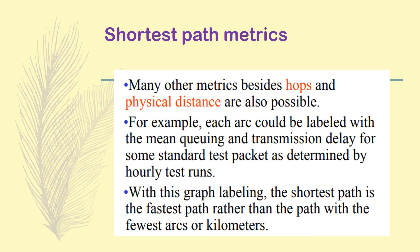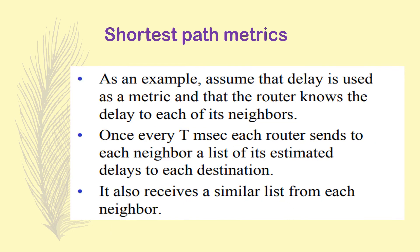Many other metrics besides hops and physical distance are also possible. For example, each arc could be labeled with the mean queuing and transmission delay for a standard test packet as determined by hourly test runs. With this labeling, the shortest path becomes the fastest path rather than the path with the fewest arcs or kilometers. As an example, if delay is used as a metric and each router knows the delay to each of its neighbors, once every T milliseconds each router sends to each neighbor a list of its estimated delays to each destination, and it also receives similar lists from each neighbor.